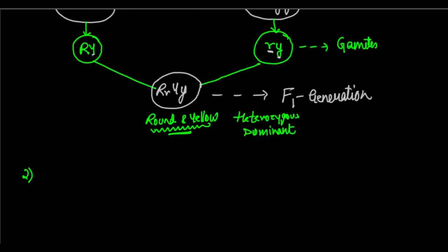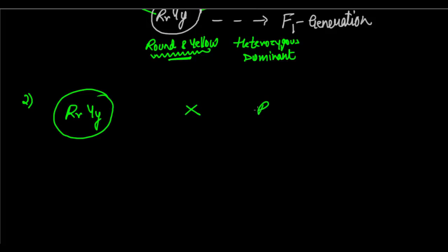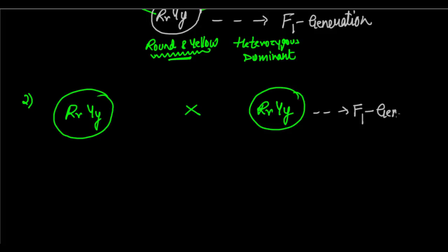Now for the second part, Mendel took two plants from the F1 generation and did self-pollination. He took capital R small r, capital Y small y and crossed it with another plant of the same F1 generation — also capital R small r, capital Y small y. Both were round and yellow. Now let's look at the gametes from this cross.